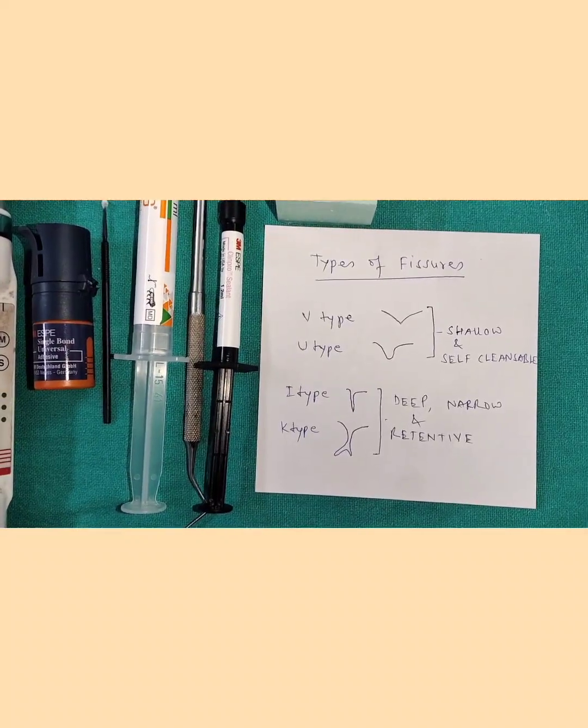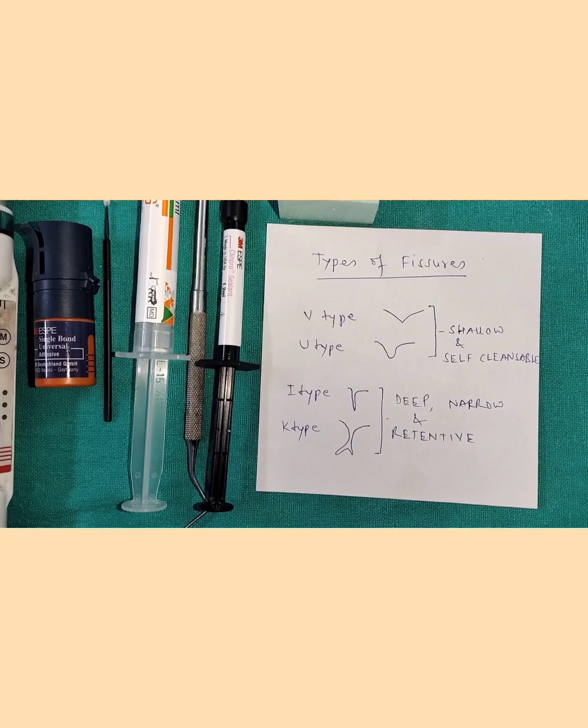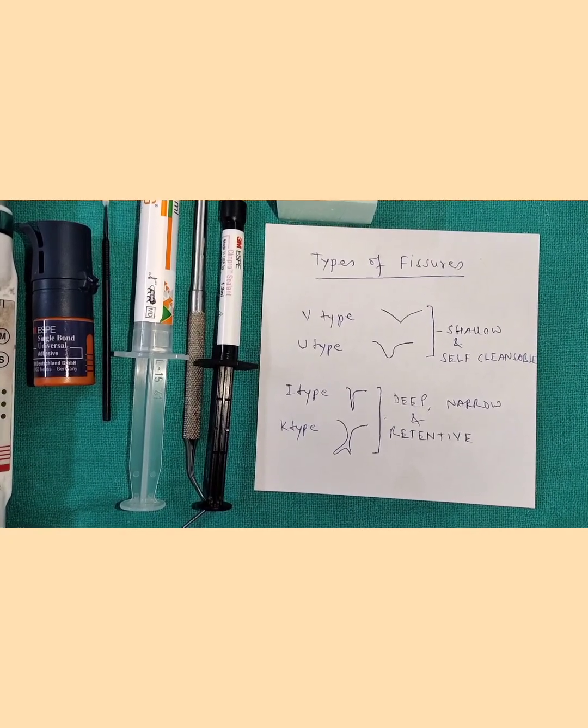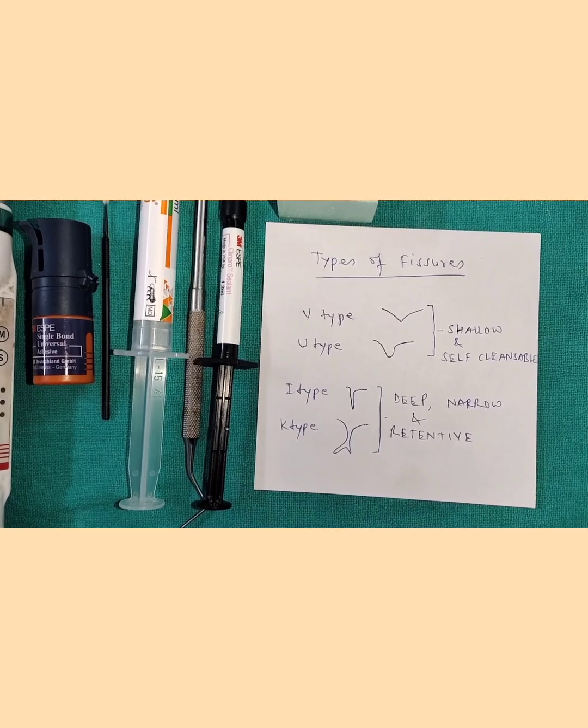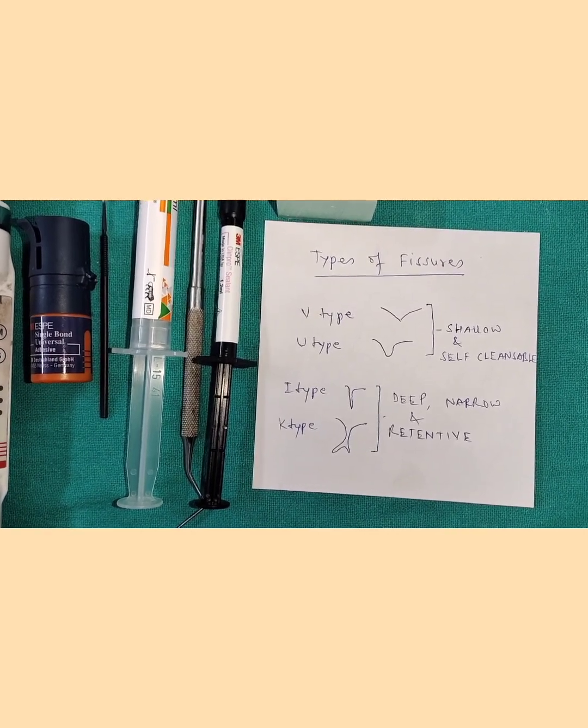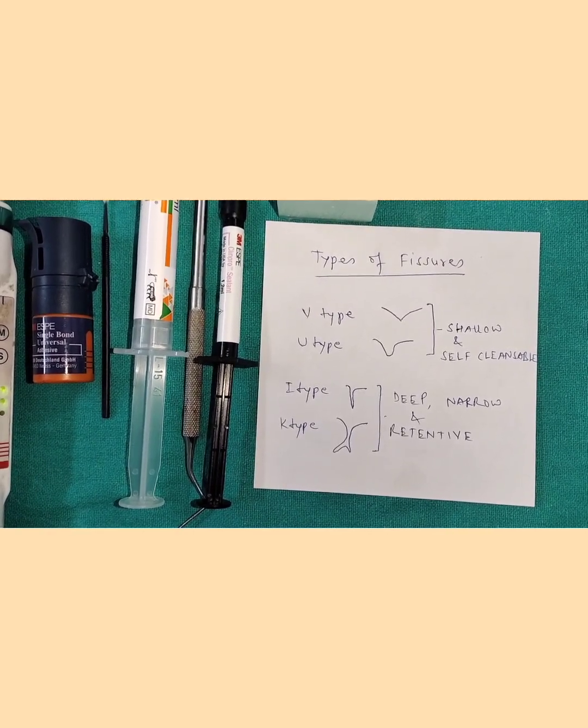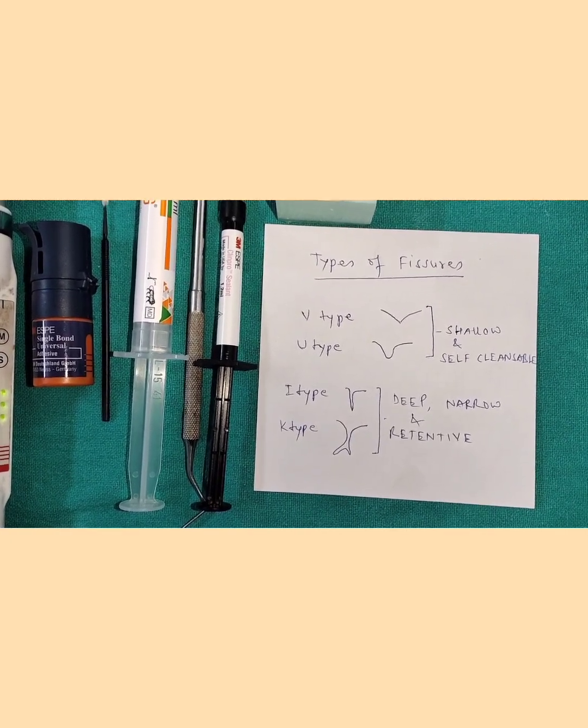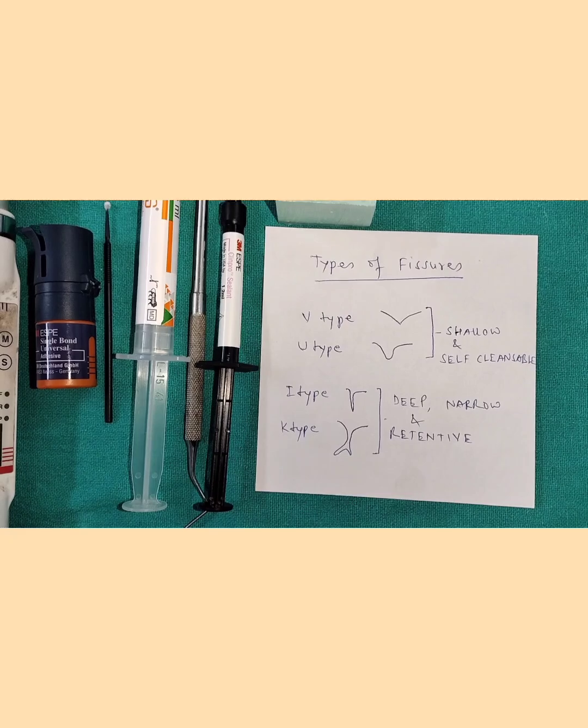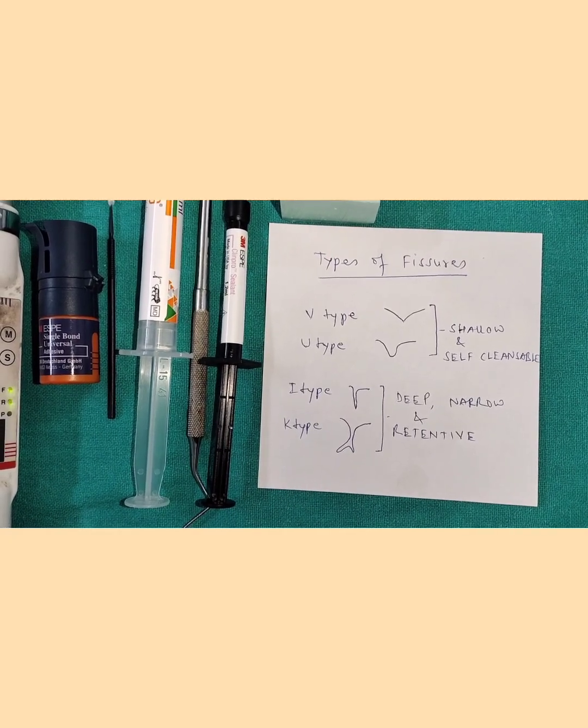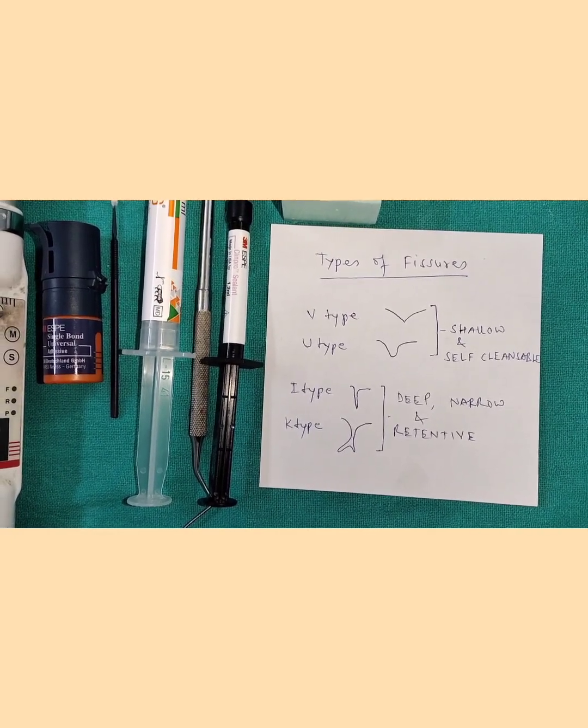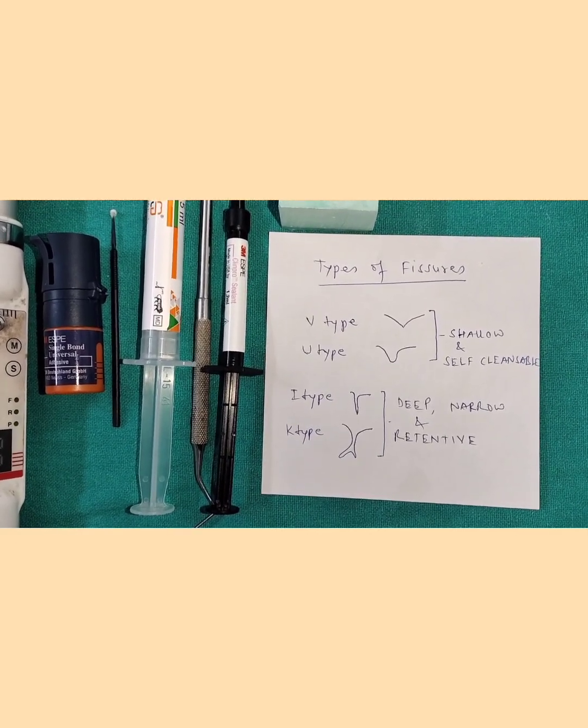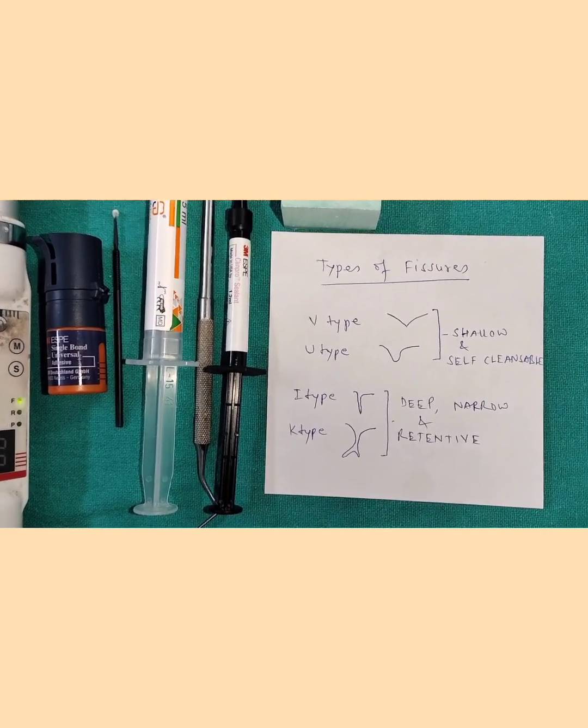Now if we see that there are four types of fissures. One is V type and U type. Now V and U, as you can see, they are shallow and they are self-cleansable. So actually no intervention is required in this. Then you have I type and K type deep fissures. Now these are basically deep and narrow channels which are retentive to dental plaque or food debris. So in those cases you require to treat it with pit and fissure sealants.